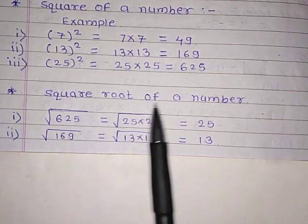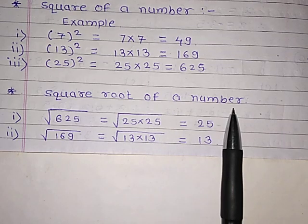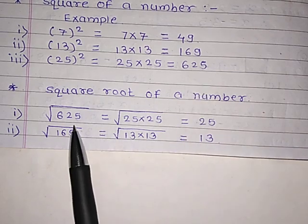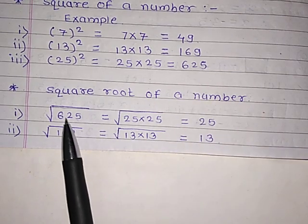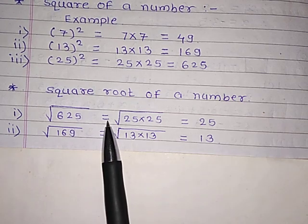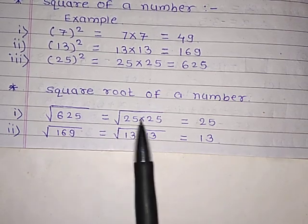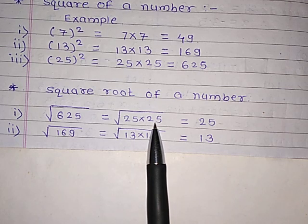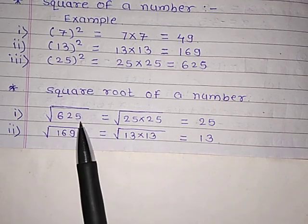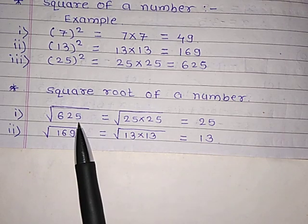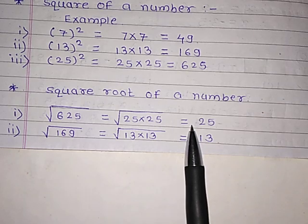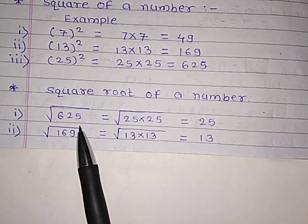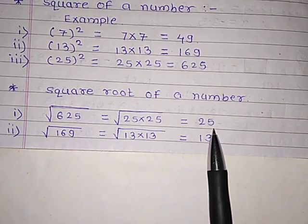Now we will see the square root of a number. Here we have 625 in the square root sign, which we can write as 25 multiplied by 25. So we can say the square root of 625 is equal to 25.